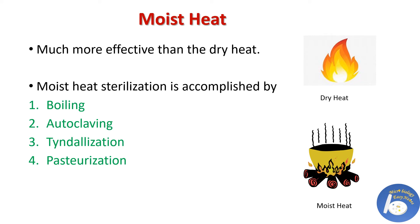Now for moist heat methods: moist heat is much more effective than dry heat as its penetration power is greater. It can easily penetrate denser objects and kill microorganisms present in inner areas. However, substances like oil, powder, and materials which are susceptible to rusting cannot be sterilized by moist heat. Moist sterilization can be accomplished by boiling, autoclaving, tyndallization, and pasteurization.